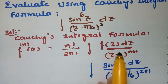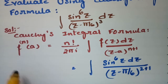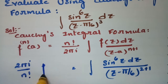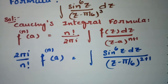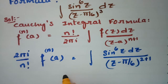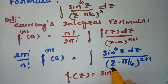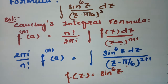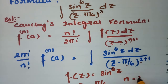Using this formula, if I rearrange, the integral equals 2πi divided by n factorial times the nth derivative of f at a. Comparing with our integral, f(z) = sin⁶z, a = π/6, and n = 2.